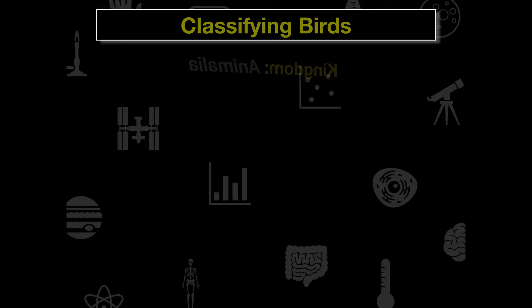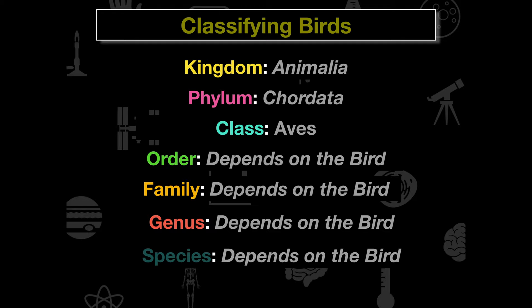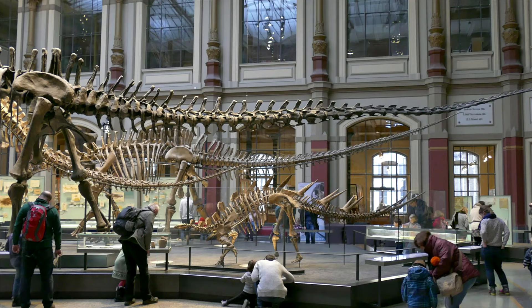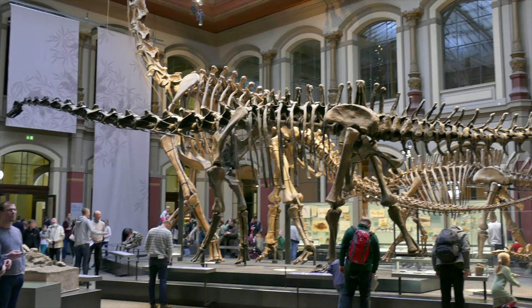When we classify birds, they are in the kingdom Animalia, phylum Chordata, class Aves, and then order, family, genus, and species depending on the bird. The class Aves is closely related to ancestral species of reptiles — birds are actually fairly close in their phylogeny to the dinosaurs.